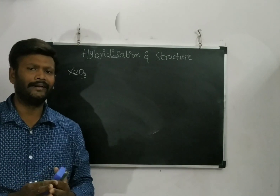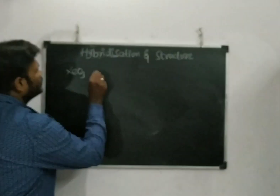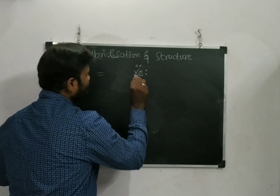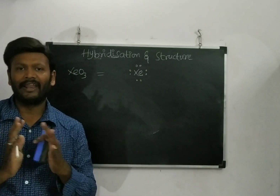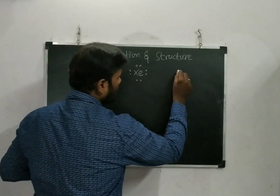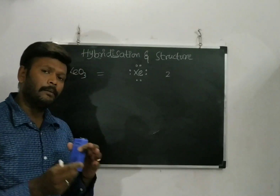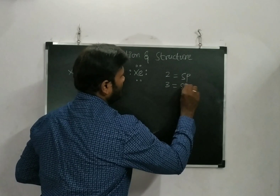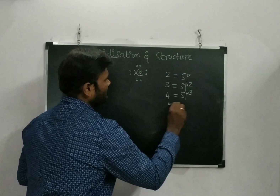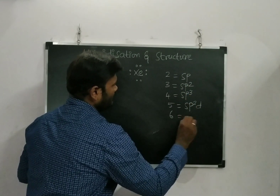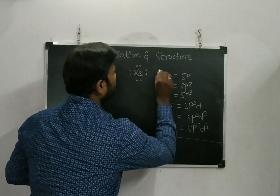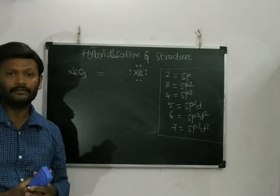So here we have XeO3. There is a very simple trick to find out hybridization easily. Xenon is a noble gas, so it has eight electrons on its valence shell. The hybridization number is the sum of lone pairs and bond pairs. If it gives 2 → SP; 3 → SP2; 4 → SP3; 5 → SP3D; 6 → SP3D2; 7 → SP3D3. Using this trick we can find out the structure and hybridization.